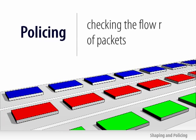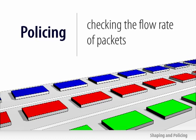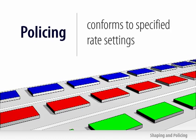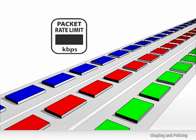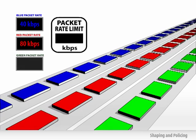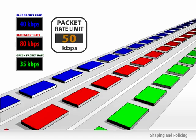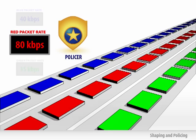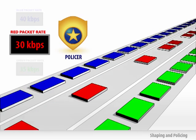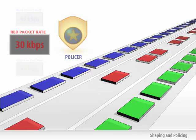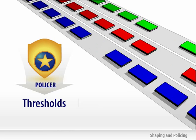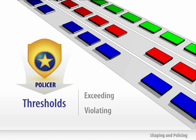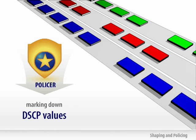Policing involves checking the flow rate of packets for a particular classification of flows to determine if it conforms to the specified rate settings. For example, a packet flow for a certain source could be set to not exceed 50 kilobytes per second. The policer will check to see if there is excess traffic, and if excess traffic exists, it can drop the packets in order to conform to that specified rate. The policer can also specify thresholds for exceeding as well as violating, and can take actions that include marking down DSCP values rather than simply dropping packets.